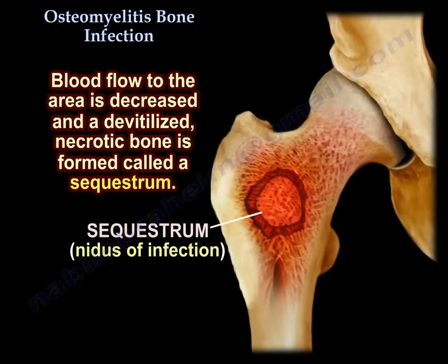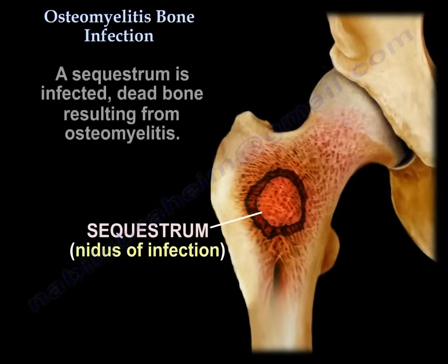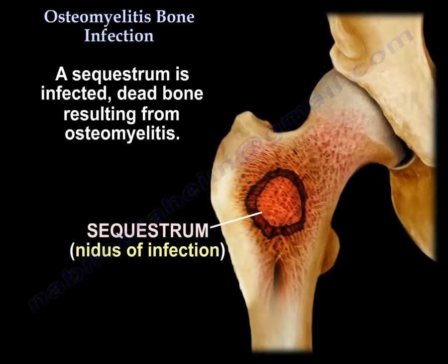The blood flow to the area is decreased and a devitalized necrotic bone is formed, called the sequestrum. The sequestrum is an infected dead bone resulting from osteomyelitis. Here there is a representative example of a sequestrum, which is the nidus of infection.